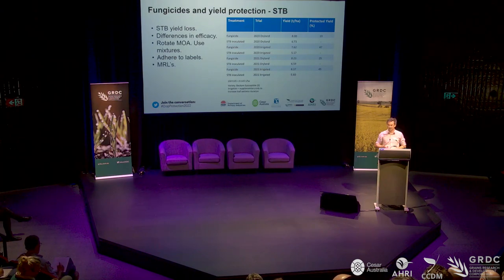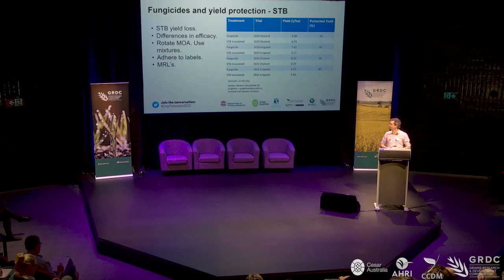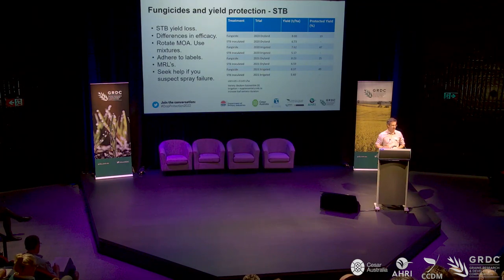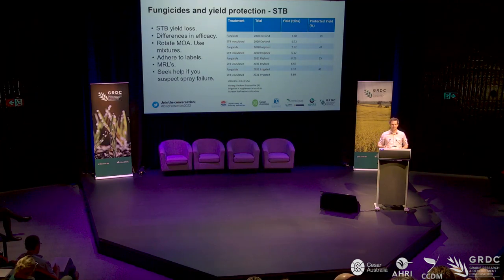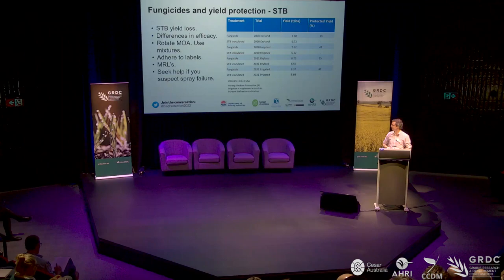Particularly because of the conducive season we've had, MRLs for late applications are something we have to keep in the back of our minds. As previously noted, strobilurin resistance has been detected in South Australia — it's localised. For New South Wales, we are still saying that strobilurins are effective against septoria, but if you suspect something has gone wrong, please seek help.